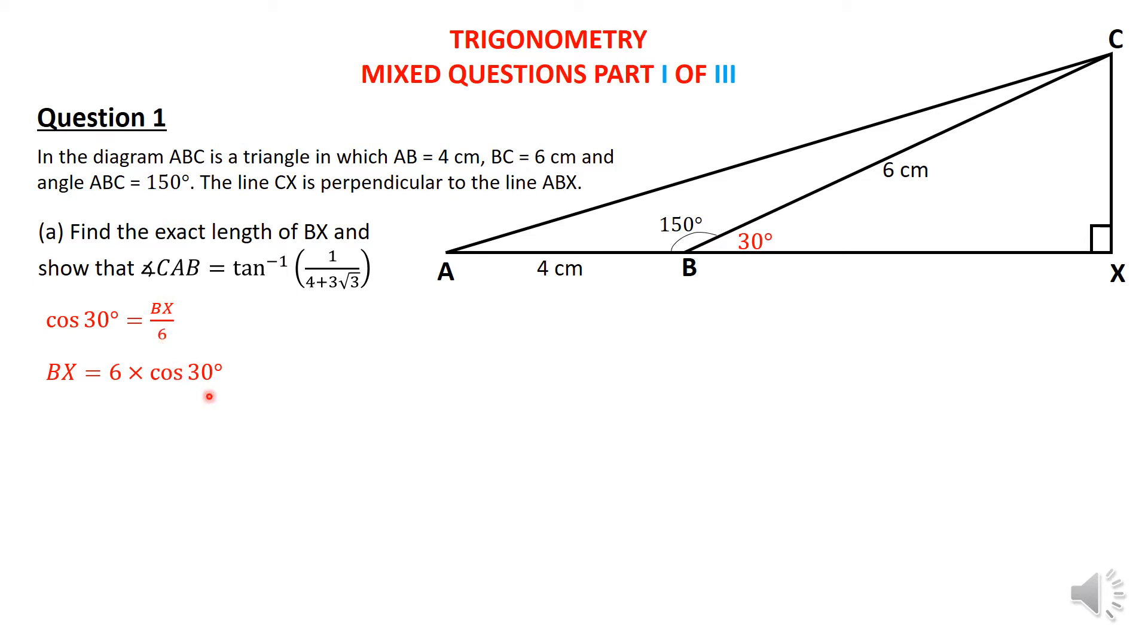Now, if you remember from our special angles, then if you have a 30 degree and the adjacent, or you want to find the cosine of 30 degrees, it's root 3 upon 2. So that's the measurement that we are going to plug in here. You can also definitely find it with your calculator. So that's going to give me 6 times root 3 upon 2, which then simplifies to 3 root 3. So that's the value or the length of BX.